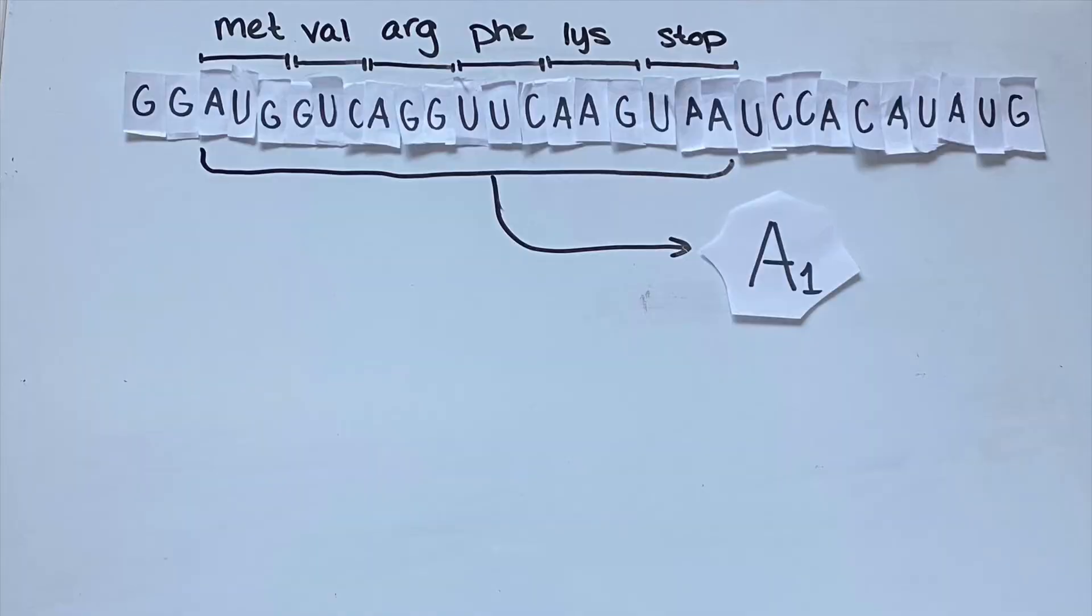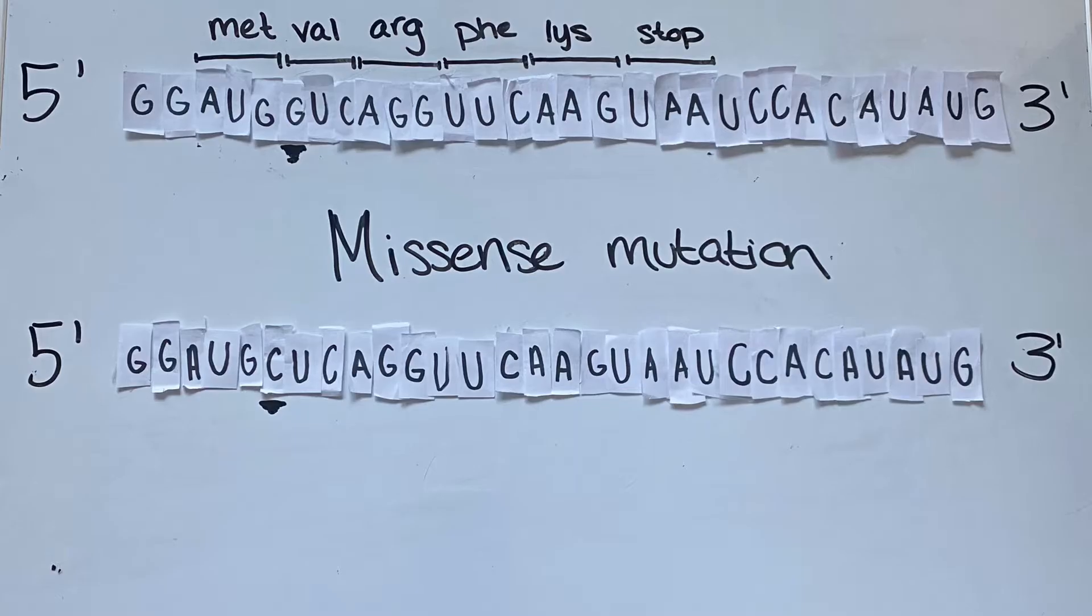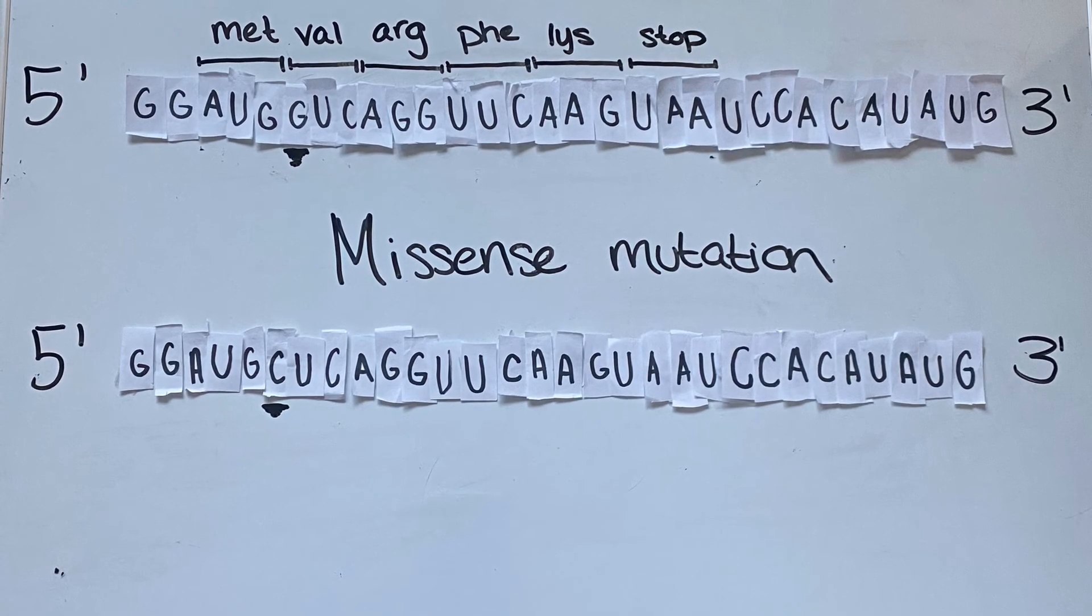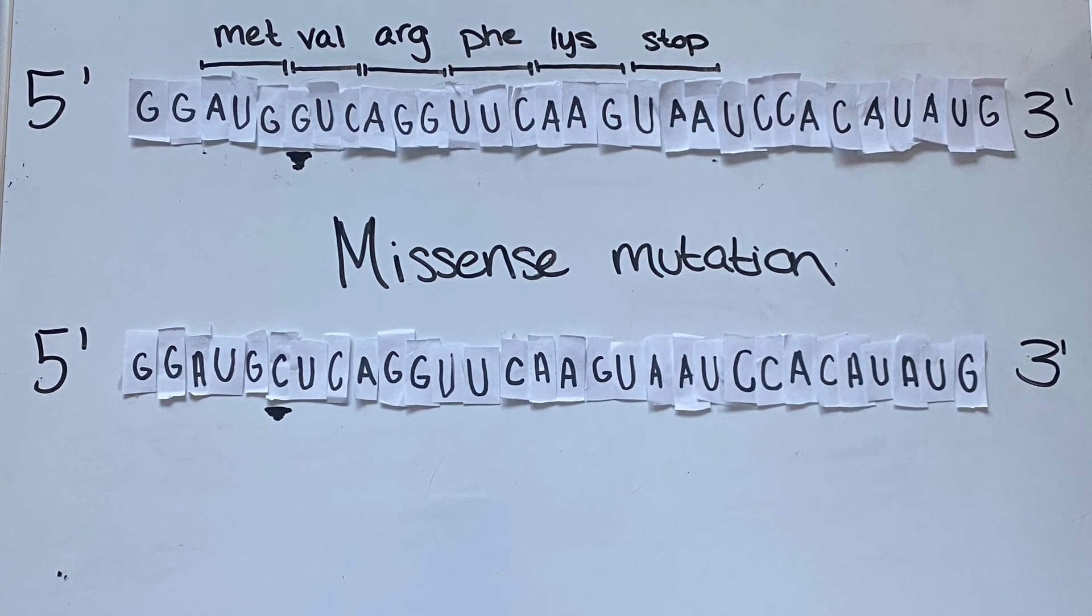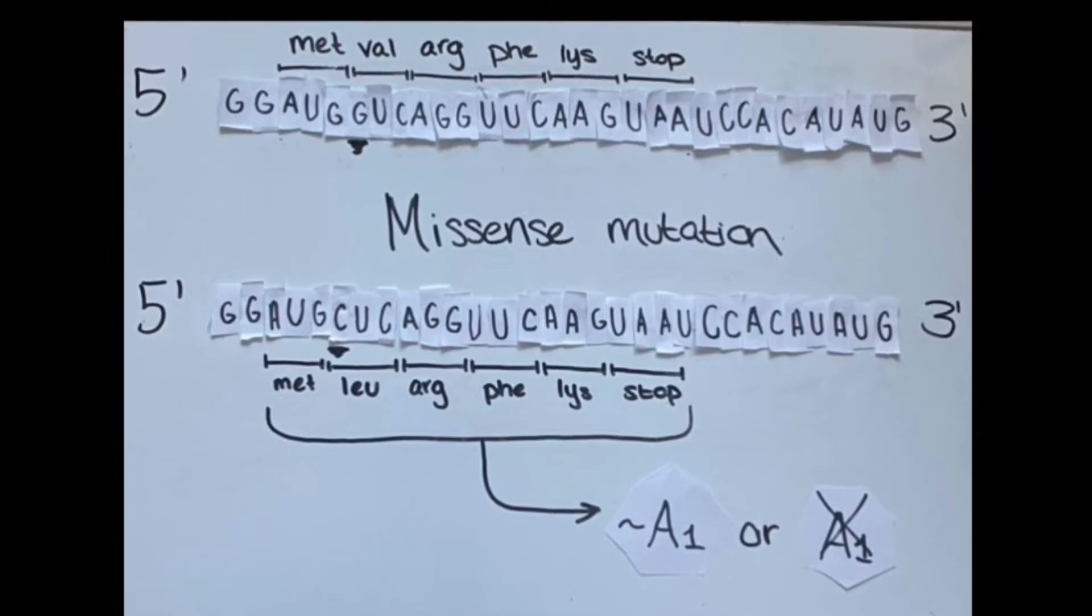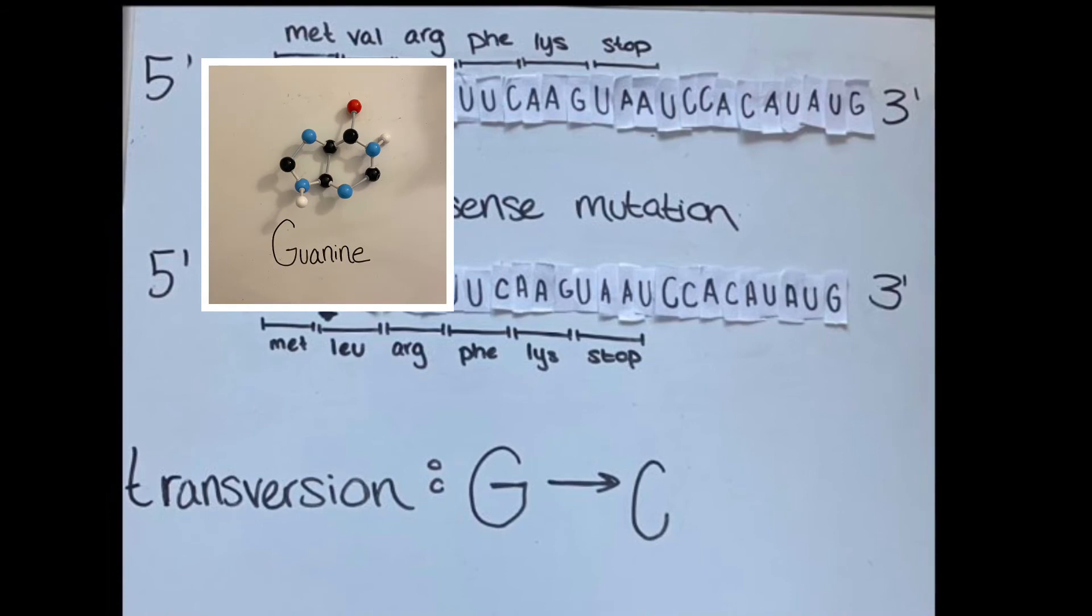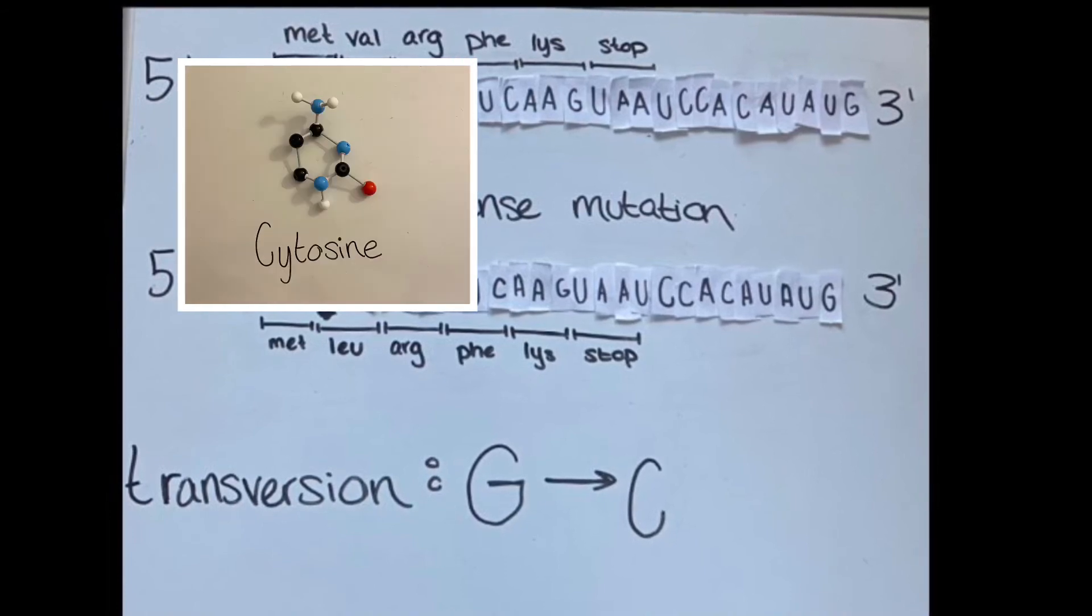Let's assume for this example that the amino acid sequence encodes for protein A1. This is also a code for some molecular structures I will demonstrate later. As you can see in the missense mutation, the highlighted base substitution changed an amino acid from valine to leucine. This mutation could result in a less effective A1 protein or a non-functional protein. This mutation would be a transversion since guanine is a purine and cytosine is a pyrimidine.